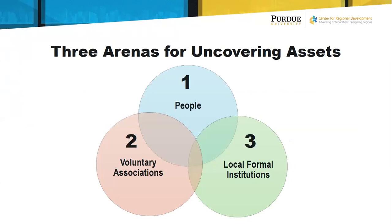What I want to do is share the three arenas that we tend to focus on when talking about asset-based community development. One is people — the residents of our community. Second is the voluntary associations that exist that really make such a difference in the lifeblood of our community. And the third is our local formal institutions. I'd like to walk you through each of these so you get a better sense of what we're talking about in terms of the assets within these three arenas.